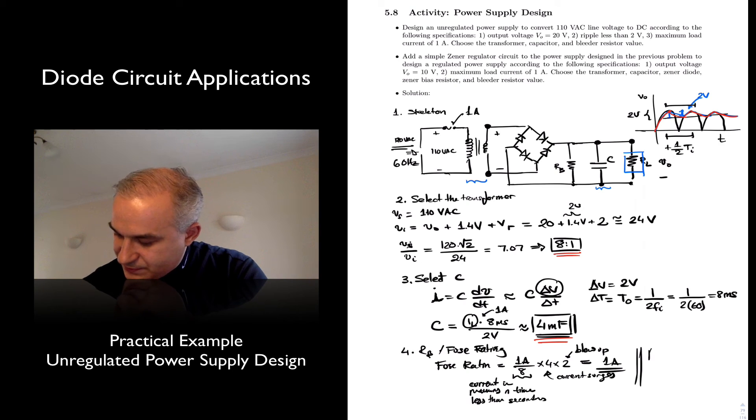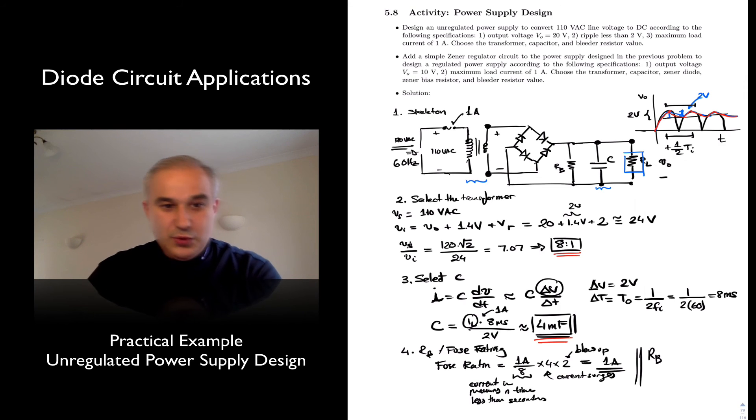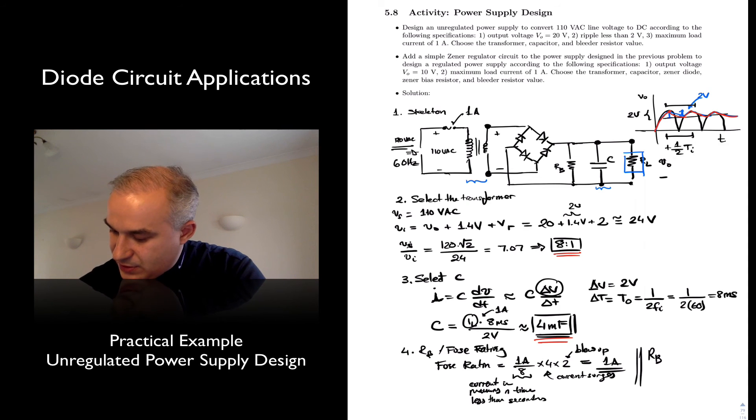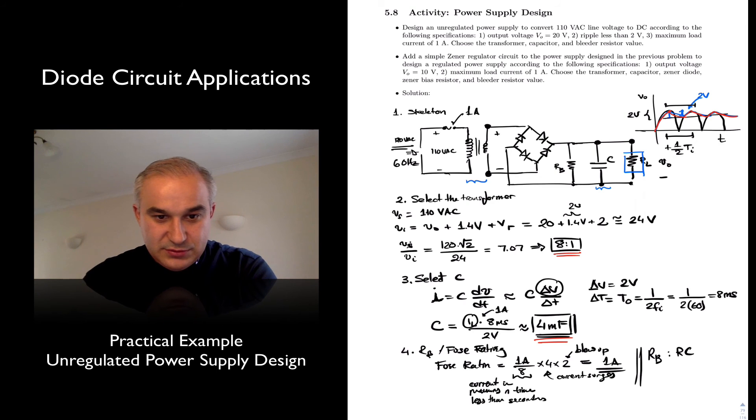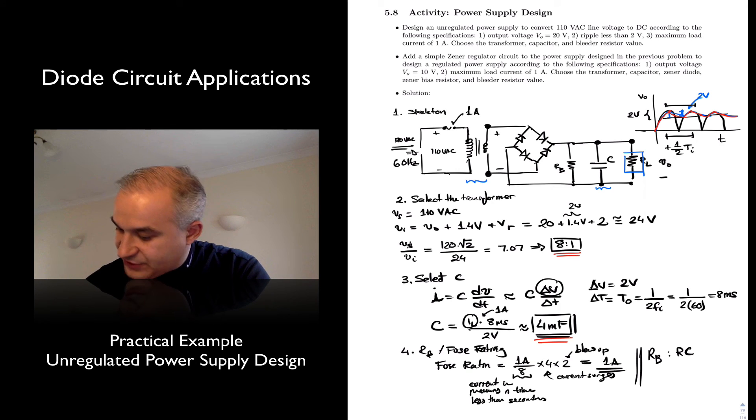And the bleeder resistor, you want to be able to discharge C in a few seconds, but large enough not to load the supply. So you may want to do say four seconds or something like that and we will have Rb equal to 4 over 4m equals 1 kilo ohms something like that.